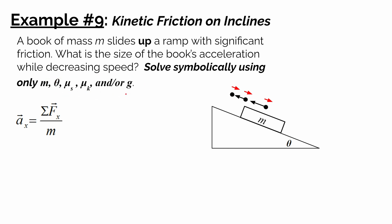To find the acceleration of any object, we look to Newton's second law: acceleration equals the sum of the forces on that object divided by the mass. If there's an acceleration in the x direction — defined as parallel to the surface — we only need the sum of forces in that x direction. If there's no acceleration in the y direction, the sum of forces in the y direction is zero.